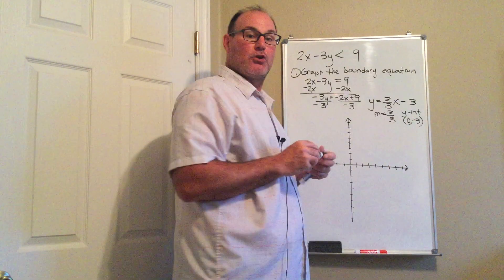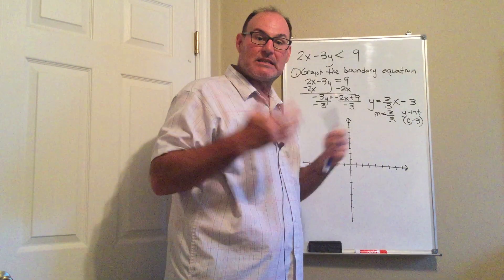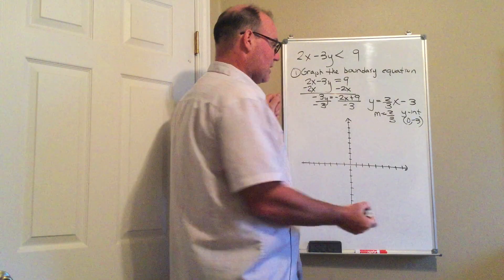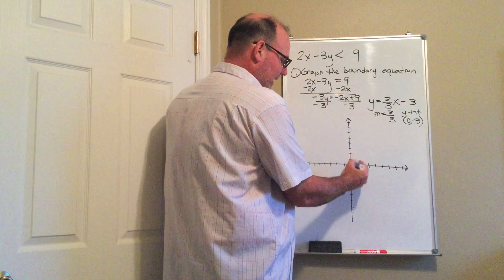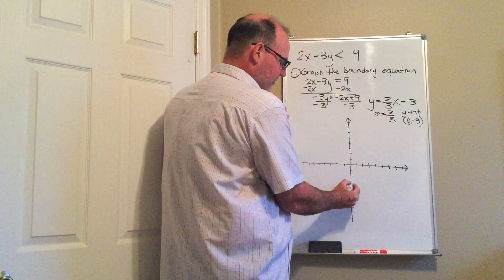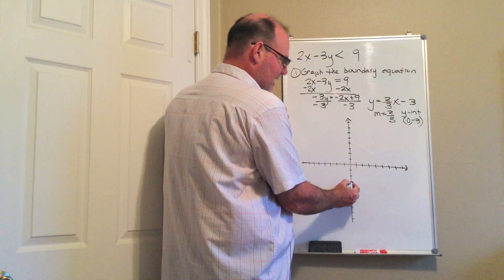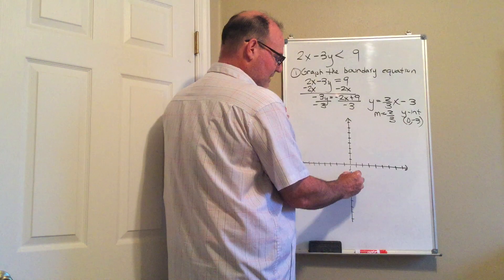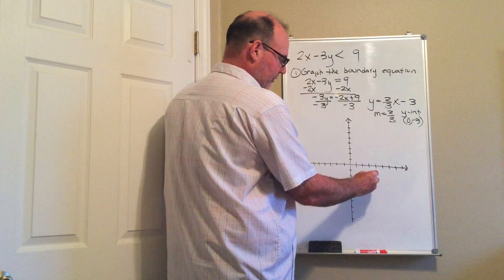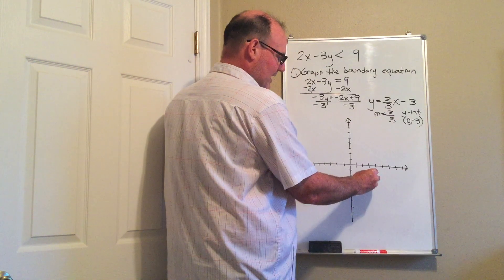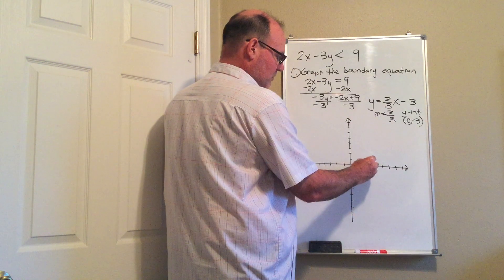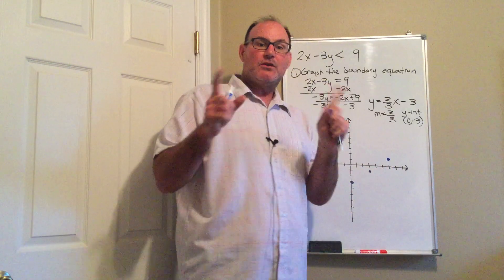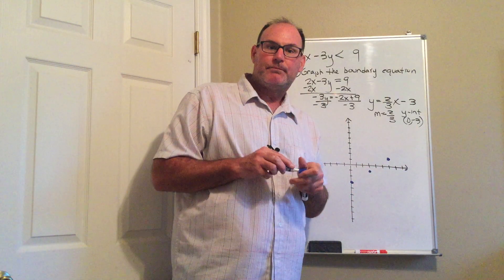I'm going to graph this the same way we were graphing equations in previous videos. My y-intercept is negative 3, and then I'm going to go up 2 and then right 3. I'm going to do that again — up 2 and then right 3. Here's step 2.